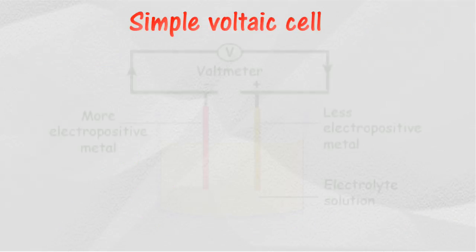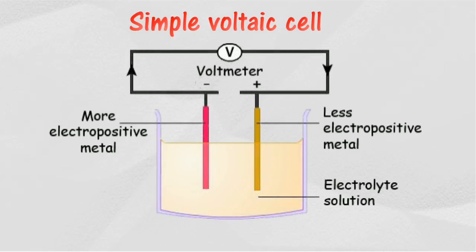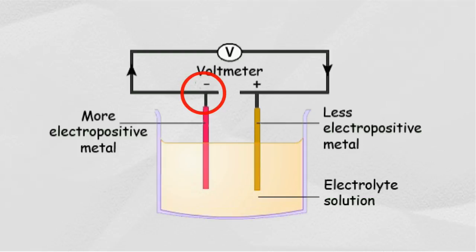A simple voltaic cell has two different conductors which are immersed in electrolyte solution and connected to each other with connecting wire. Metals that are located higher up in the electrochemical series will act as the negative terminal, while the lower part will act as the positive terminal.